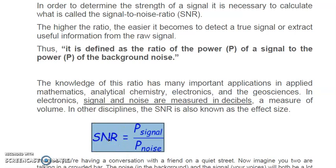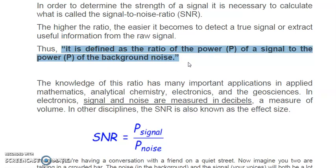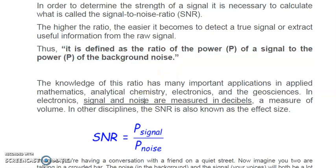If the signal to noise ratio is greater, the numerator — the signal — has a greater quantity compared to noise, making it easier to detect the true signal or extract useful information. For better signal quality, the SNR value should be higher. SNR is defined as the ratio of the power of a useful signal to the power of background noise, and knowledge of this ratio is important in applied mathematics, analytical chemistry, electronics, and geosciences.